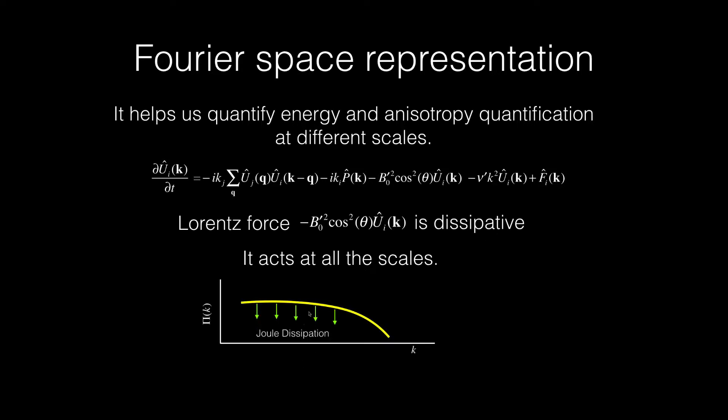Due to the additional dissipation by this Joule's term, the energy flux decreases with k. It is not a constant like Kolmogorov theory. As a result, the energy spectrum E_k is steeper than Kolmogorov's k^(-5/3) spectrum because of this Joule's dissipation.